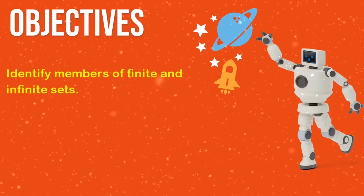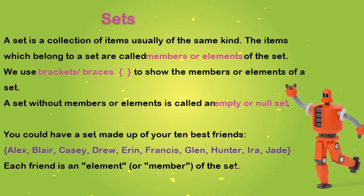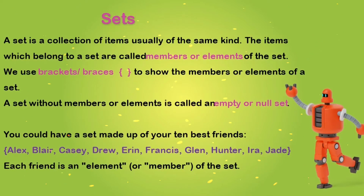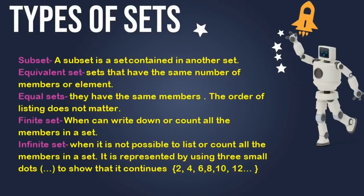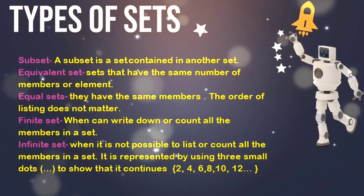Our next objective is to identify members of finite and infinite sets. Let us pause to refresh our memories on what a set is. A set is a collection of items, usually of the same kind. The types of sets are: subsets, equivalent sets, equal sets, finite sets, and infinite sets. I encourage you to pause and read through the details.